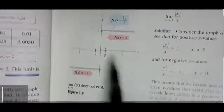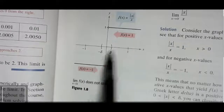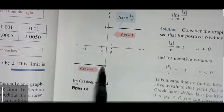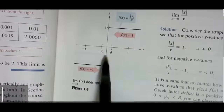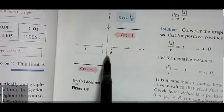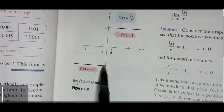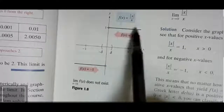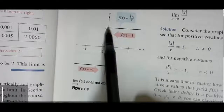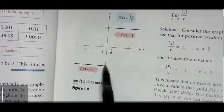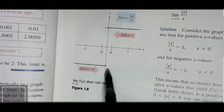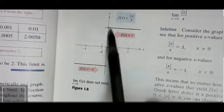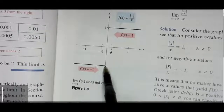If we are given a function, we can use a table to find out whether or not the limit exists and what it is if it does. Before we do that, let's look at when limits do not exist. There are three different cases when limits do not exist, summarized in your book on page 50 under the common types of behavior associated with the non-existence of a limit.